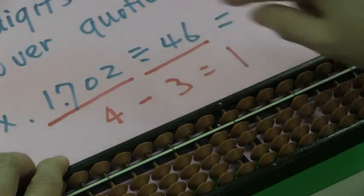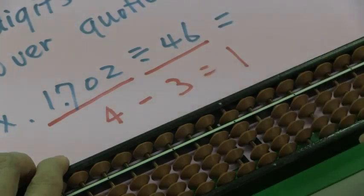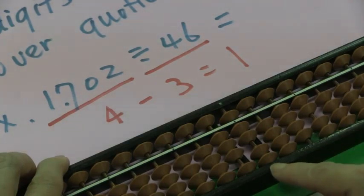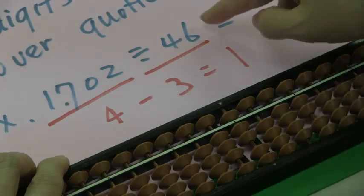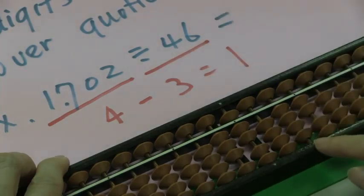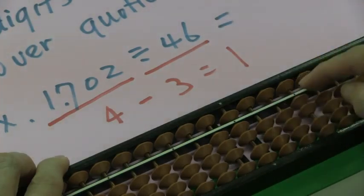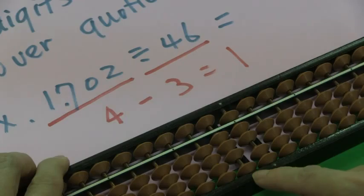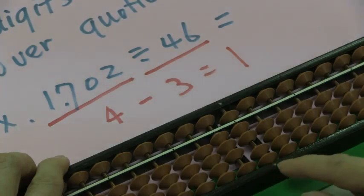1 times 4 is 4. Now, the remainder is 46. We use the quotient 7 times 6 is 42. Subtract 42, and the remainder is 0. We know the answer is 37.